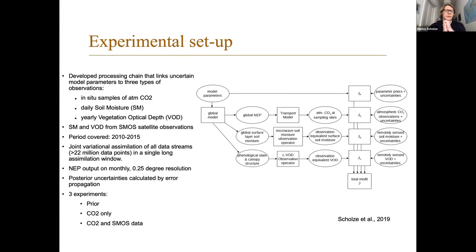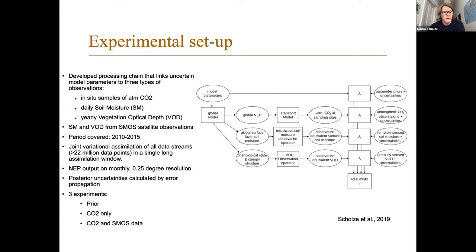Altogether over that period, at 0.5 degree resolution on which we assimilate the data, we have more than 22 million data points. The output is on a quarter degree resolution. We calculate posterior uncertainties on the net flux using error propagation. We have three experiments: the prior - running the prior parameter values in open loop - then CO2 only, and CO2 plus SMOS data, just to analyze the impact of the SMOS data. The model output is linked via different observation operators to the observations, and we calculate cost function components for each observation and sum them up to the total misfit.